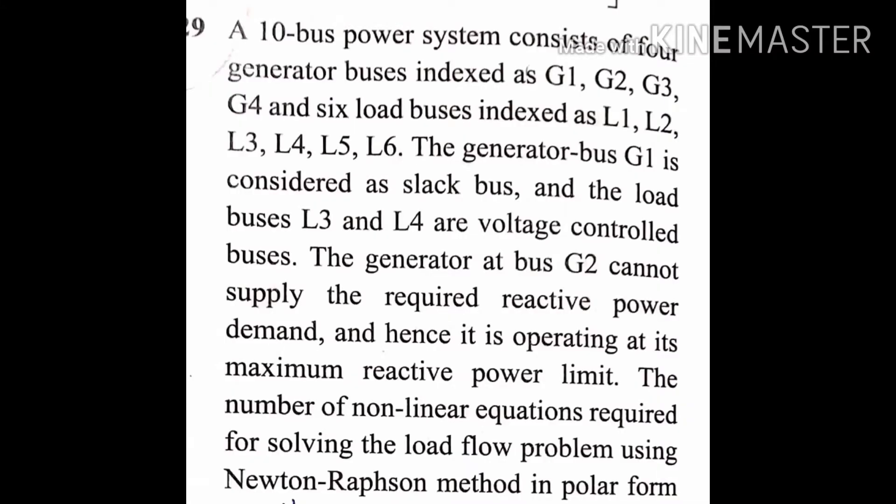The last problem: A 10-bus power system consists of 4 generator buses (G1, G2, G3, G4) and 6 load buses (L1 through L6). The generator at bus G2 cannot supply the required reactive power and is operating at its maximum reactive power limit. The number of nonlinear equations for Newton-Raphson polar form is asked.